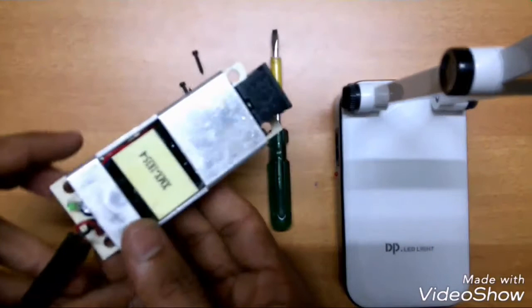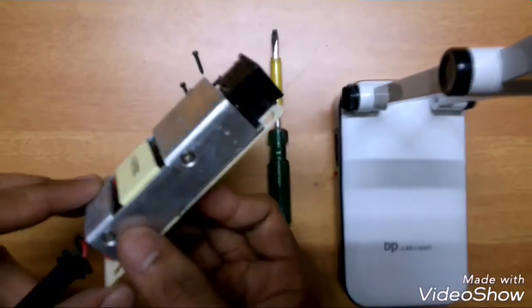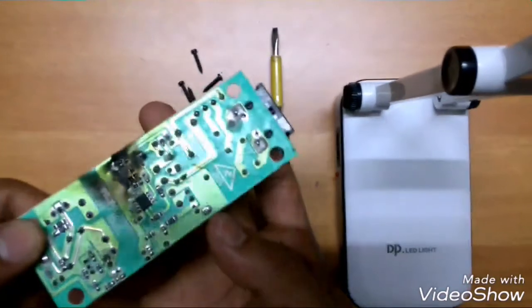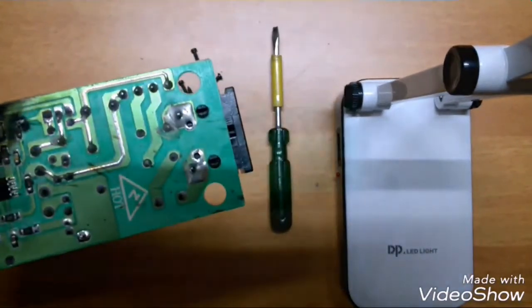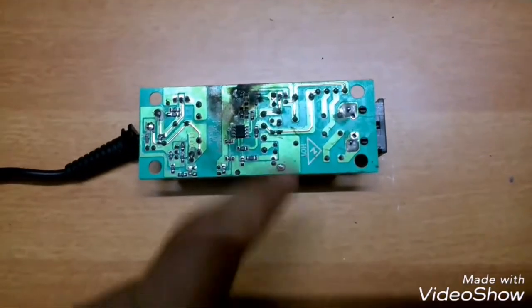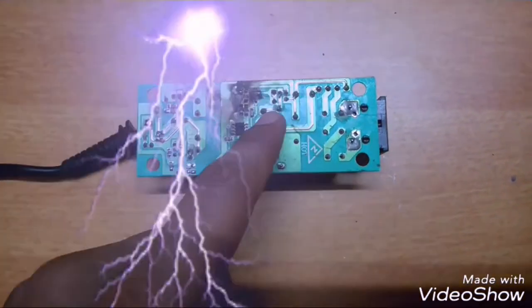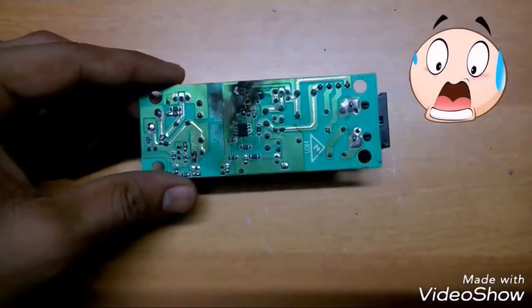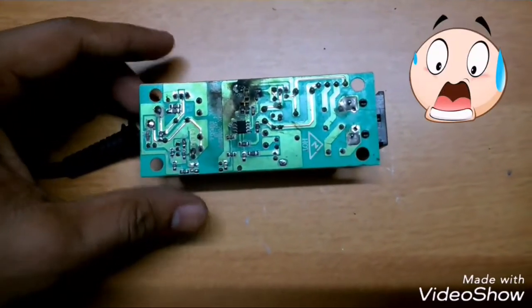So this is how an adapter, the internal structure of an adapter looks like. As you can see, the PCB is burned in this region. That's why the adapter has not worked.